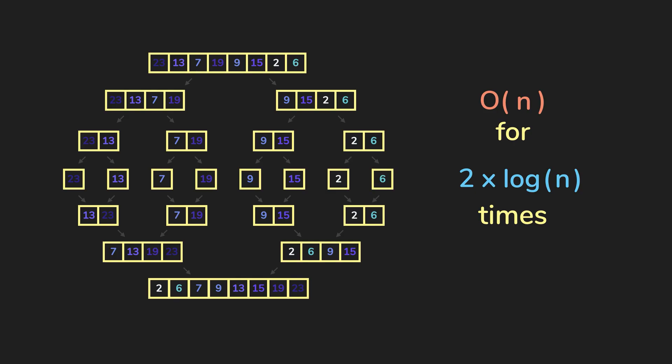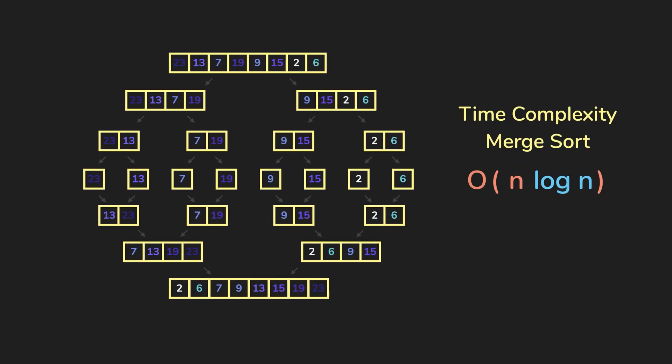So two times log(n) stages multiplied by O(n) for merge or divide. That gives us a time complexity of O(n log n). Hence the time complexity of merge sort is O(n log n).